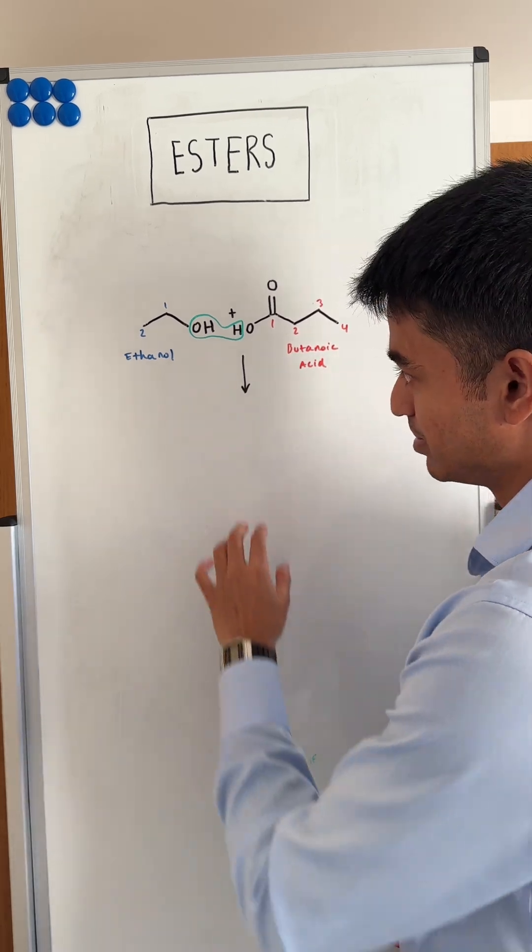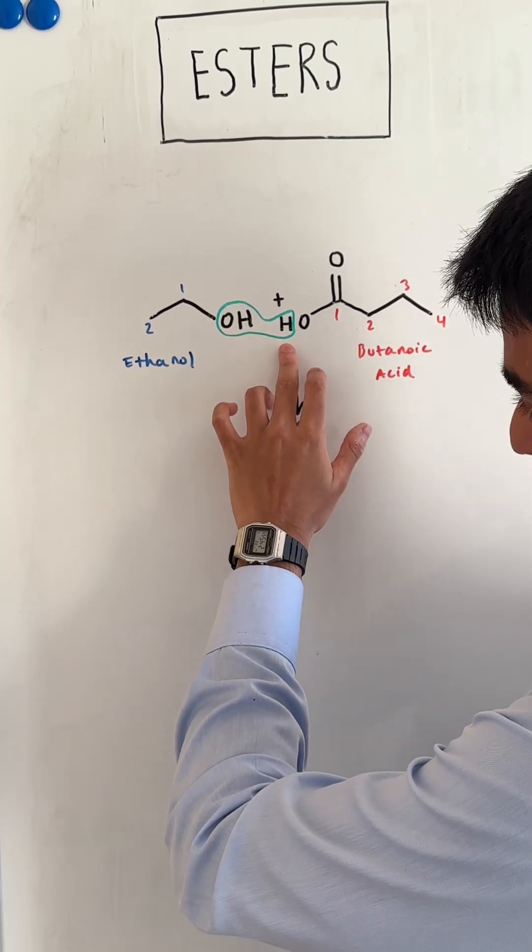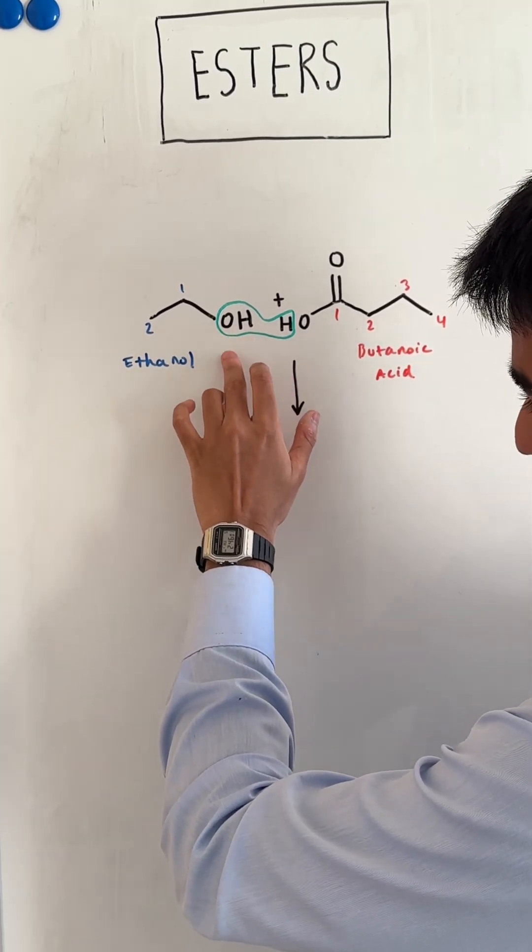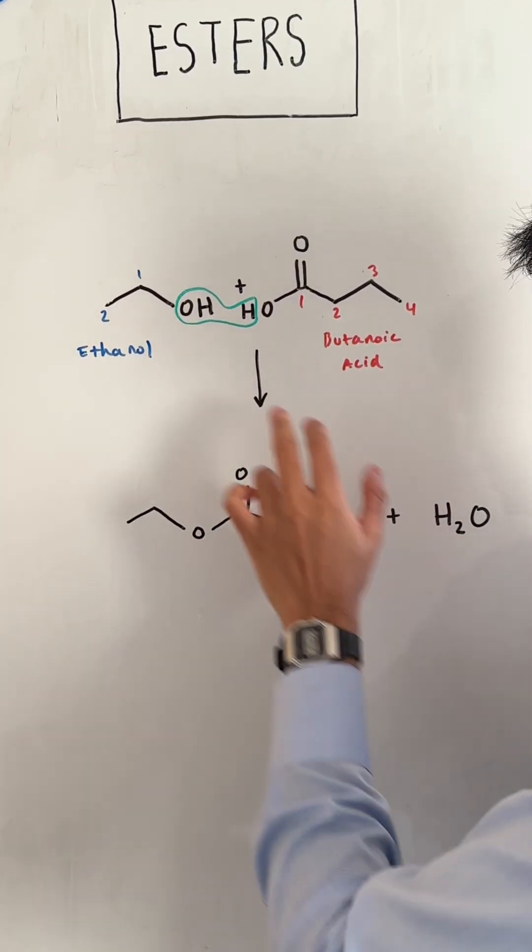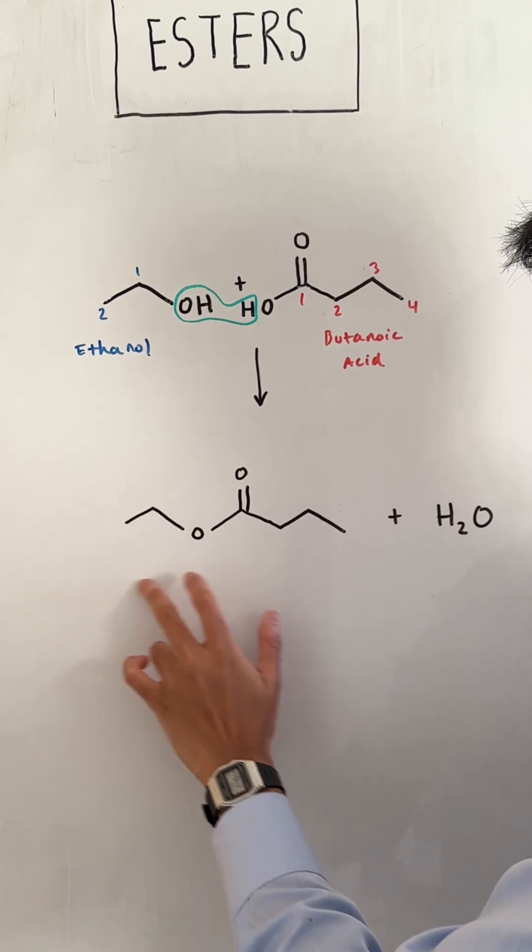The way esterification happens is the H from the carboxylic acid reacts with the OH of the alcohol. These groups join to form water and the other two molecules combine to form the ester.